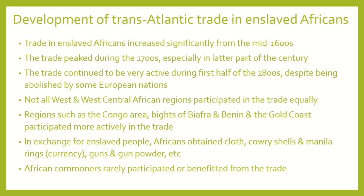What were Africans obtaining through participation in the trade? They were obtaining clothes, cowrie shells, and manila rings. Cowrie shells and manila rings are important because they were used as currency in local commercial exchanges. The Europeans were essentially bringing cash equivalents. And of course, guns and gunpowder — highly appreciated because of internal competition between different kingdoms in the region. From the 1700s, access to guns and gunpowder was very relevant for military confrontation. One important point, however, is that African common people rarely benefited from this trade.